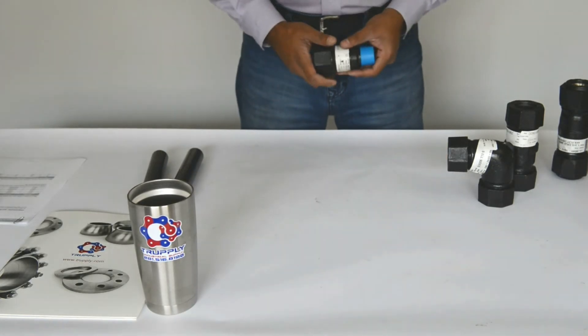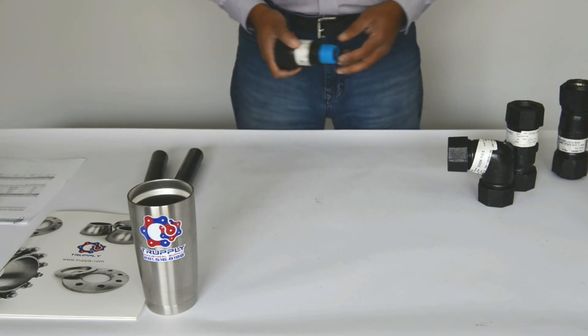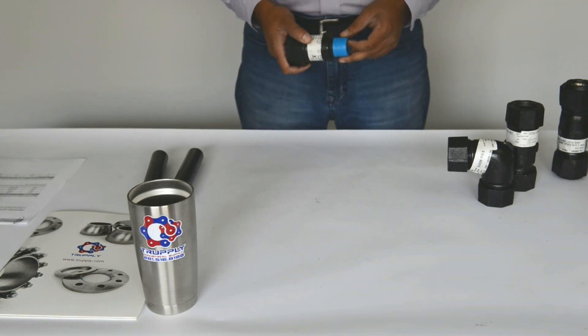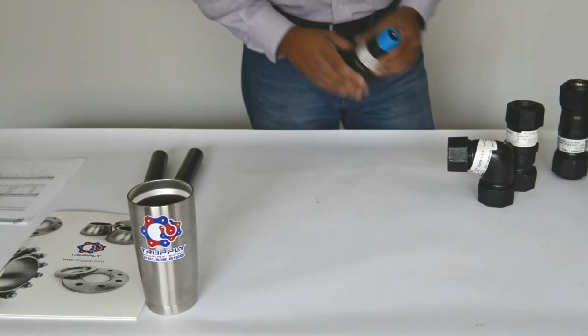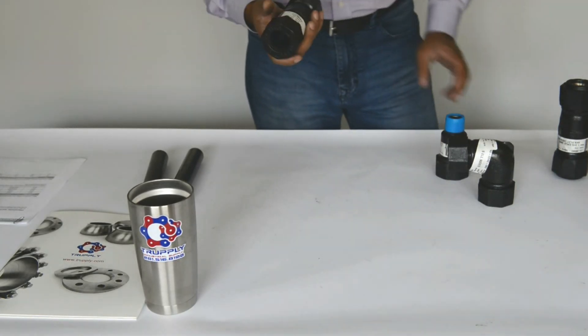So in summary, Dresser offers a line of compression couplings. These are available in sizes up to two inch, two inch nominal pipe. This is a Style 90 compression coupling.